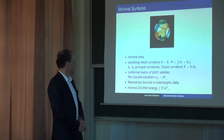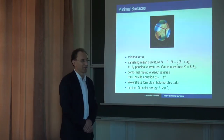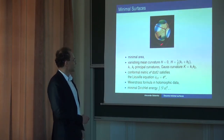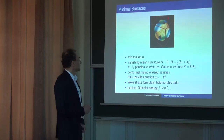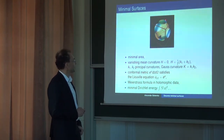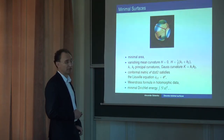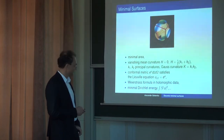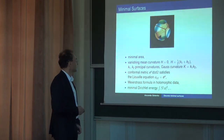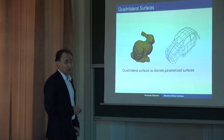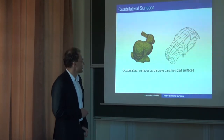Another important property is that minimal surfaces minimize the Dirichlet energy. In this picture you can imagine you have a cube — you fix these circles on the faces of the cube and then construct the surface that minimizes the area with these fixed boundary conditions. The answer is the so-called Schwarz surface.